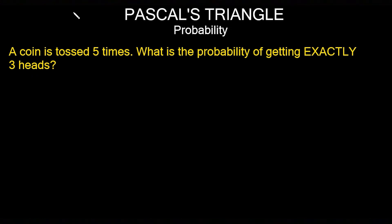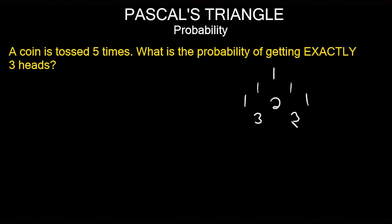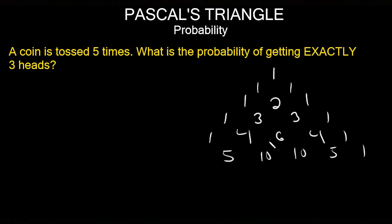If you toss a coin three times, the probability of getting at most two tails is 87.5%. Let's try one more example: this time you're tossing a coin five times and they want to know the probability of getting exactly three heads. We need to expand Pascal's triangle to the fifth power diagonal: 1, 1, 1; then 1, 2, 1; then 1, 3, 3, 1; then 1, 4, 6, 4, 1; and finally 1, 5, 10, 10, 5, 1. Those are the coefficients we'll use.